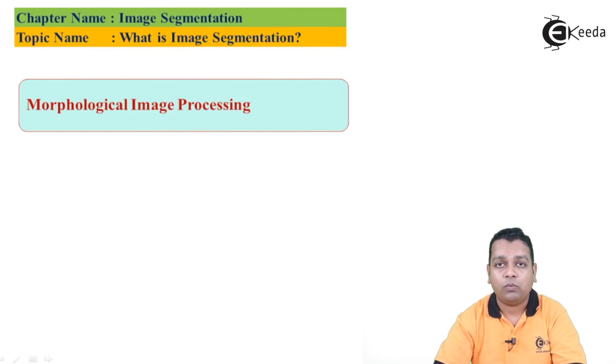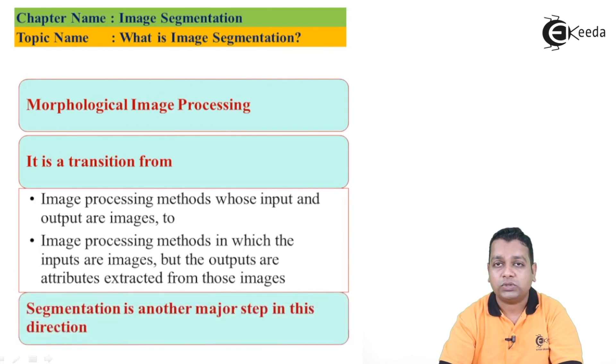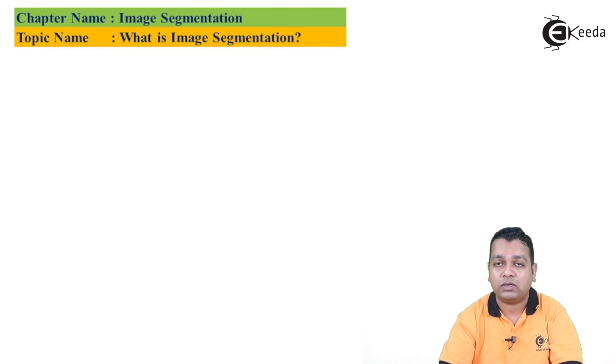While dealing with the morphological image processing operations, we had a certain modification in that particular case where the inputs were of course the digital images, but the output was in the form of certain objective parameters or simply we can call attributes. So image segmentation is another step in this particular domain. It is a transition from image processing methods whose inputs and outputs are images to image processing methods in which the inputs are images, but the outputs are attributes extracted from those images. So segmentation is another major state in this particular direction.